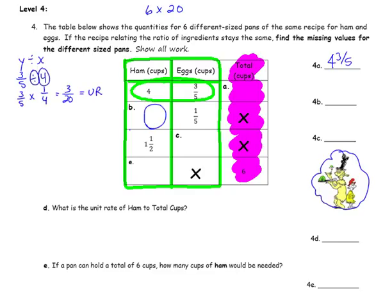Now remember when you're going from y to x, you need to divide by the unit rate. So we have 1 fifth divided by the unit rate — that's 1 fifth divided by 3 twentieths. Multiply by the reciprocal: 1 fifth times 20 over 3. Multiply and the answer is 2 fifteenths.